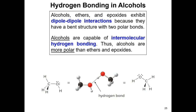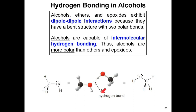Alcohols are a little bit different compared to ethers and epoxides in that alcohols contain a hydrogen bonded directly to an oxygen atom. This allows alcohols to form hydrogen bonds, and because of that, alcohols have higher melting point and boiling point relative to ethers and epoxides.